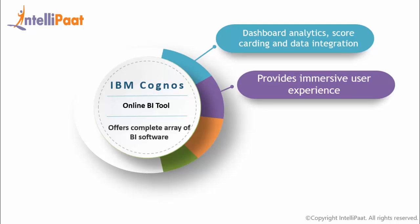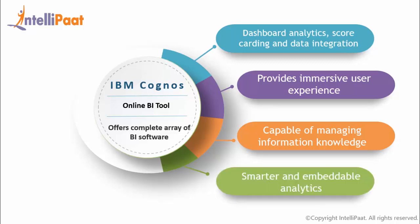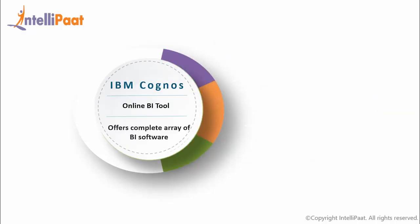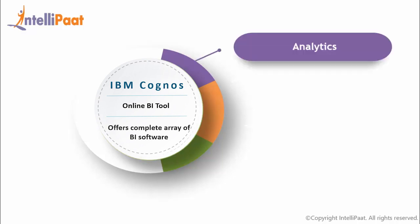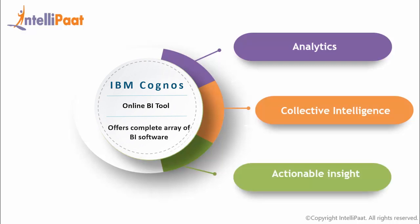Cognos provides intuitive and immersive user experiences focused on analytics and discovery. Data governance and business-IT collaboration provide the ability to manage information knowledge and answer questions. It also features smarter and more embeddable analytics. IBM Cognos allows organizations to outshine others through analytics — answering key business questions in a fraction of seconds using OLAP techniques — collective intelligence through collaboration and social networking, and actionable insight that allows business people to respond to real-time situations.